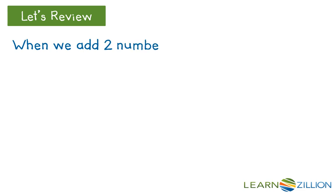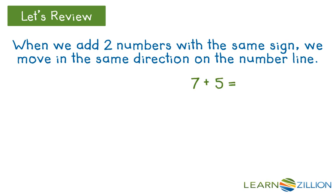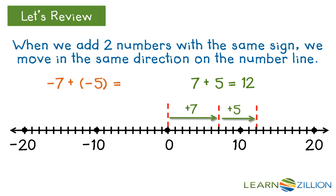When we add two numbers with the same sign, we move in the same direction on the number line. For example, 7 plus 5: the addends are both positive, so we move to the right 7 units and then 5 units for an answer of 12. In negative 7 plus negative 5, both addends are negative, so we move to the left 7 units and then 5 units for an answer of negative 12.